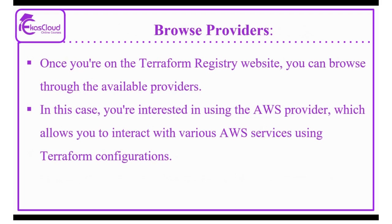Next, how to browse providers. Once you are on the Terraform registry website, you can browse through the available providers by navigating to the provider section. There you will find a list of various providers that enable interactions with different cloud platforms, APIs, and services. To use the AWS provider specifically, you would search for it in the list of services or use the search functionality provided on the website. Once you locate the AWS provider, you can access its documentation, including information on how to install and configure it for use with Terraform.